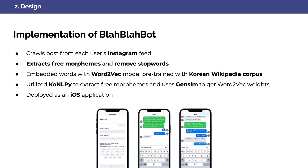We developed BlaBlaBot as an iOS application where the system crawls users' Instagram posts and processes them. During the process, BlaBlaBot utilizes Word2Vec, KoNLPy, and Gensim for embedding words and extracting free morphemes.